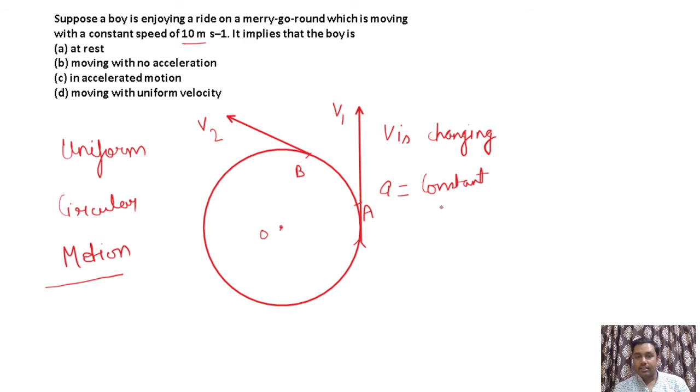Therefore, it is said to be in accelerated motion. So things you have to remember: in case of uniform circular motion, the speed is constant. Velocity changes due to change in direction, and this velocity change means the body has constant acceleration.